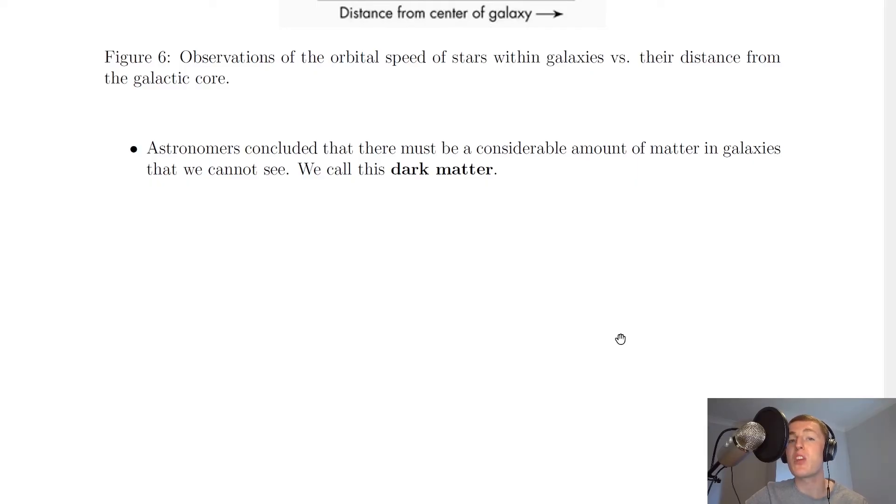So to summarise this briefly, dark matter explains why there is a difference between what is observed and what is expected for the orbital speeds of stars within galaxies.